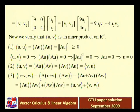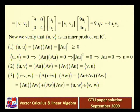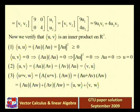The inner product of u plus v with w can be expressed as the inner product of a(u+v) with aw, which equals au plus av dotted with aw. That gives au·aw plus av·aw, which can be expressed as inner product(u,w) plus inner product(v,w). So it satisfies all four conditions.